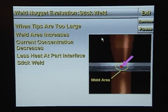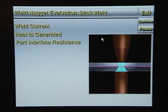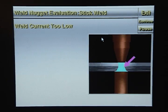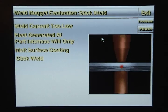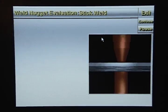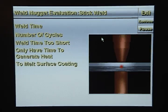When weld current flows through the metal stack-up, heat is generated by the part interface resistance and the weld tip interface resistance. If the weld current is too low, the heat generated at the part interface will only be enough to melt the surface coating and you will get a stick weld. If the weld time is too short, the weld current will only have the time to generate enough heat to melt the surface coating, and you will get a stick weld.